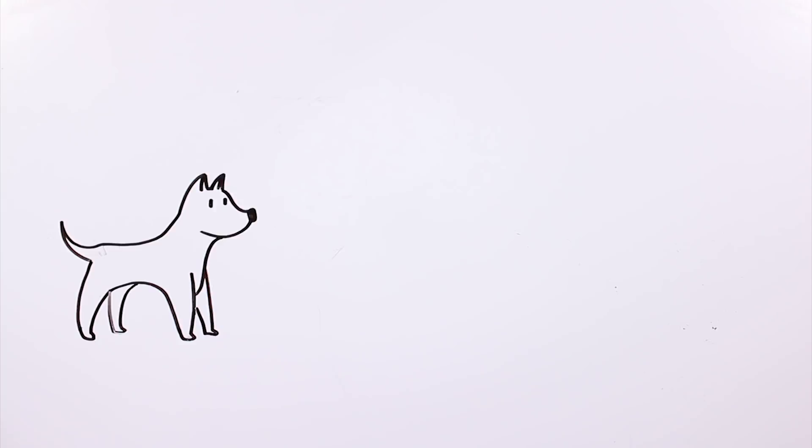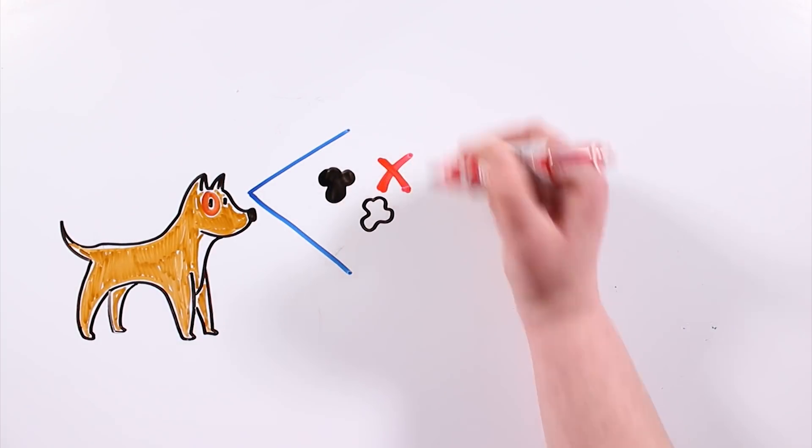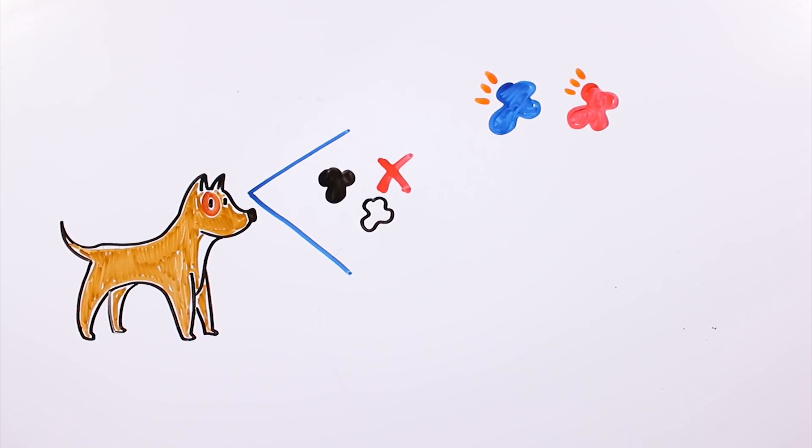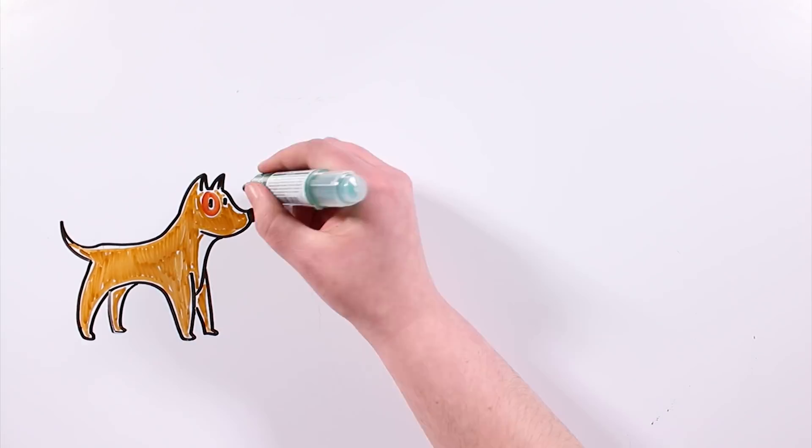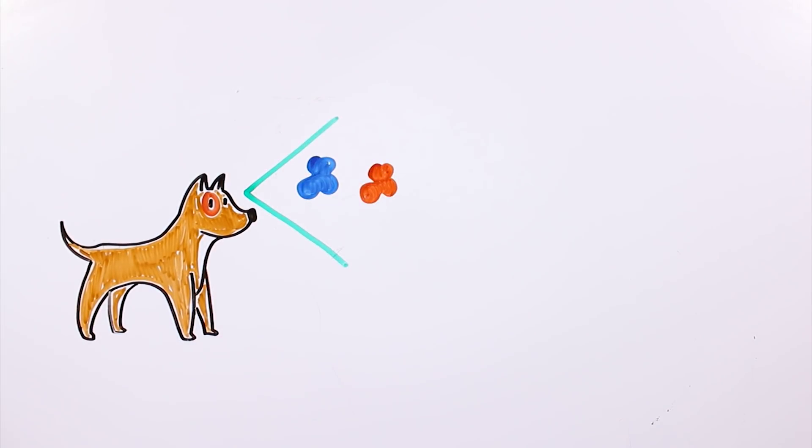Let's start with dogs. Even though it is usually thought that they see in black and white, recent studies have proven this to be wrong. They can distinguish blues, reds, yellows, and browns. They have a dichromatic vision built with only two colors.